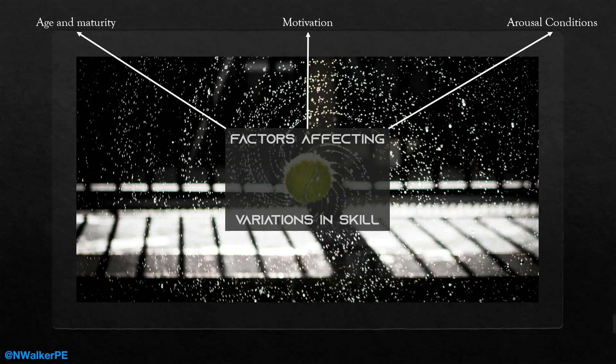Next is arousal conditions. We'll come to arousal in more detail later on, but this essentially considers someone's mindset — what frame of mind they're in when performing. Are they excited, nervous, or angry? These all affect someone's performance in sport and affect their skills.